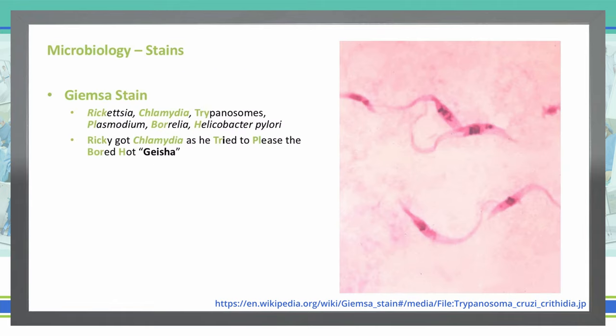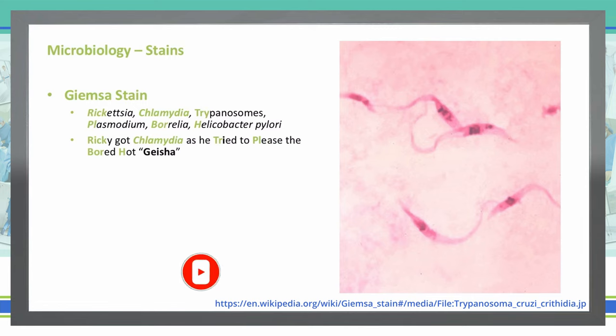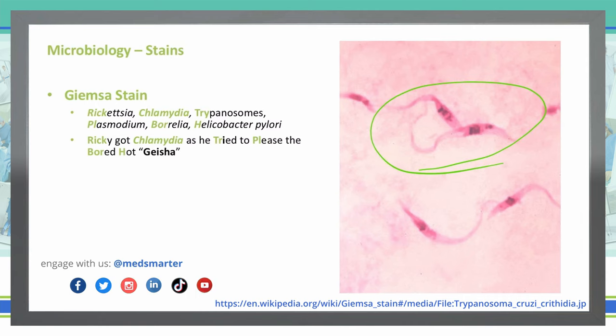Another stain we can use is the Giemsa stain, which is a nucleic acid stain that will stain Rickettsia, Chlamydia, trypanosomes, Plasmodium, Borrelia, and Helicobacter pylori. In the picture shown, you can see the pink stain with the nucleic acid Giemsa stain — this specifically is Trypanosoma cruzi.